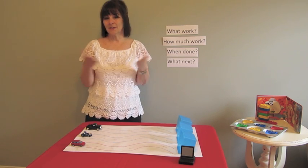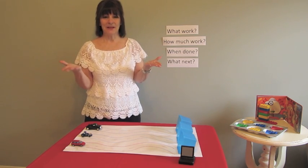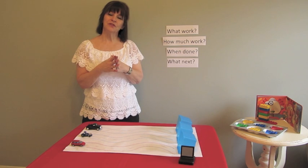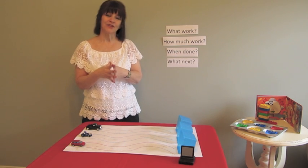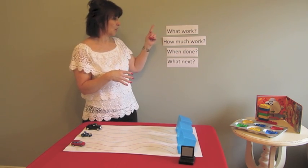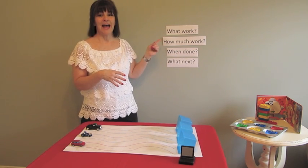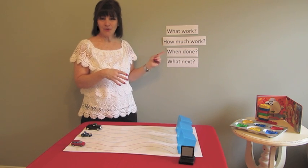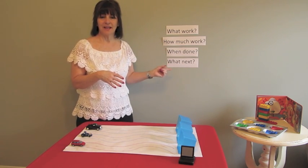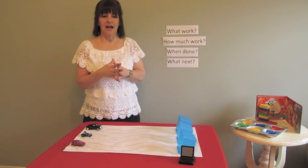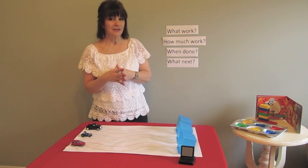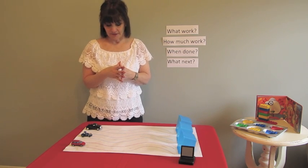So what is a work system? Basically it's a procedure to visually answer these four questions: What work? How much work do I have? How do I know when I'm done? And what comes next? I've got several examples to show you today, so let's get started.